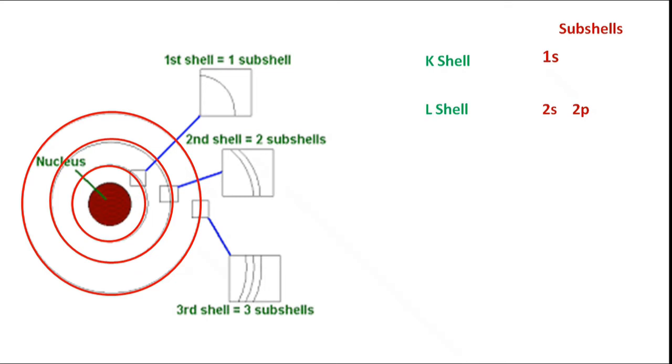For third shell, M shell, there are three subshells: 3S, 3P, and 3D. For N shell, similarly, four subshells: 4S, 4P, 4D, and 4F. These subshells can hold maximum electrons as follows.